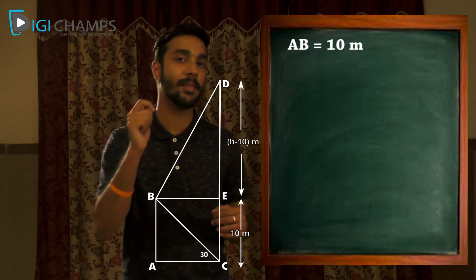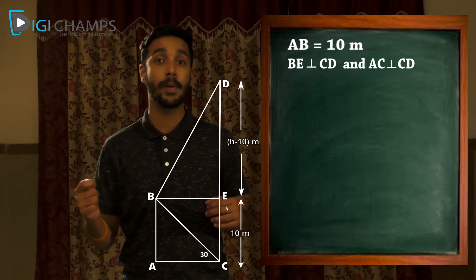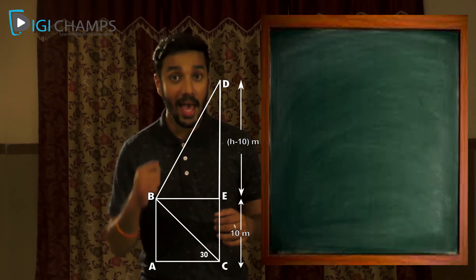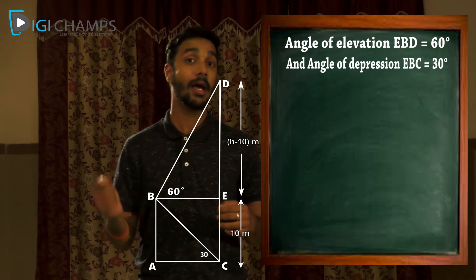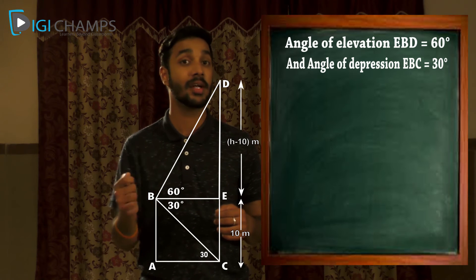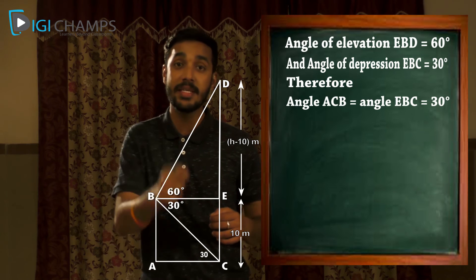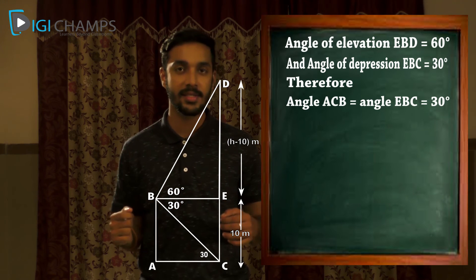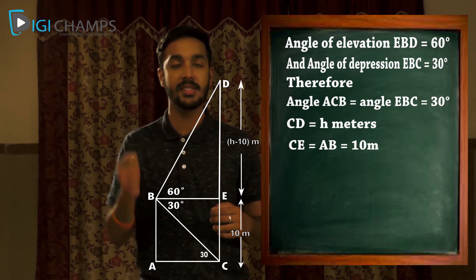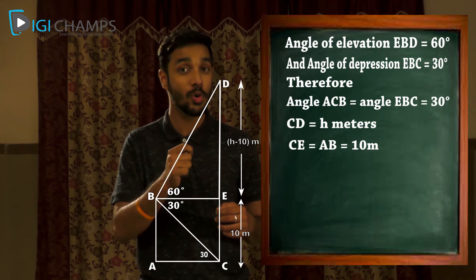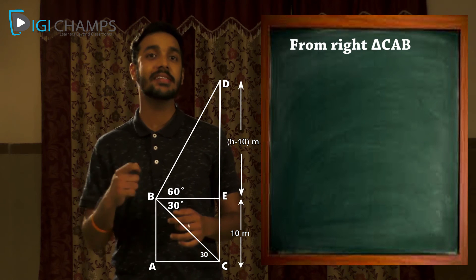Let AB be the deck and CD be the hill, with the man standing at point B. AB = 10 meters. Let BE be perpendicular to CD and AC be perpendicular to CD. The angle of elevation EBD = 60° and the angle of depression EBC = 30°. Therefore angle ACB = angle EBC = 30°. Let CD = H meters, so CE = AB = 10 meters and ED = H − 10 meters.